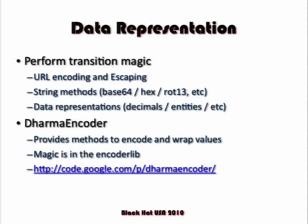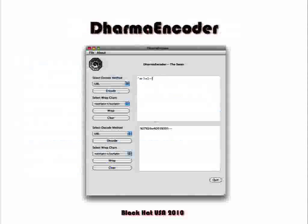Dharma Encoder is a tool I wrote because I like having a standalone encoder and I like wrapping values in text. The magic of Dharma Encoder is in the encoder lib. If you want to know how to represent data a certain way in Python — SQL character encoding, Oracle encoding, and a bunch of other things — you can look through the encoder lib on the Google Code site. It's a PyQt app with a dropdown to change different encodings and you can wrap values in things like script tags.